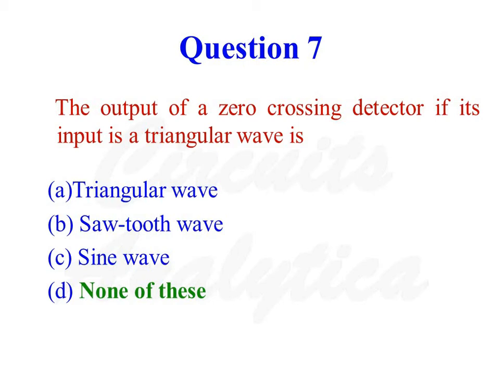Whenever the signal crosses the zero line, the output voltage of the operational amplifier changes. We know that in a comparator, the output voltage changes between plus Vsat and minus Vsat. So when a triangular wave is supplied with the other input connected to ground, the output switches between plus Vsat and minus Vsat, and the on time equals the off time, producing a square wave. So none of the given options is correct.